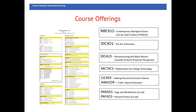For our grade 12s, we have the IDC 4U3 course, Deconstructing Anti-Black Racism, which will look at the systemic roots of racism in the Canadian and North American perspective. We also have the MCT 4C1 course — a mathematics course that can be used for college application, but can also be used as a bridge between the grade 11 mixed MCF 3M1 and the grade 12 advanced functions course. For students in our special education program, we have the CIC 4E9 course, Making Personal and Economic Choices, and the AWA 209 craft course. In our phys ed department, we will be offering the PAR 401 yoga and mindfulness and PAF 401 personal fitness courses at the co-ed level.